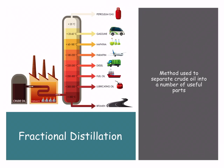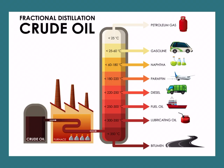Fractional distillation is the method we use as scientists to separate crude oil into its useful parts. You can see the image there on the top left, giving you a brief indication of what is happening. We have a fractional distillation column, and it ranges in size depending on what your product is — what you need to obtain from that crude oil.